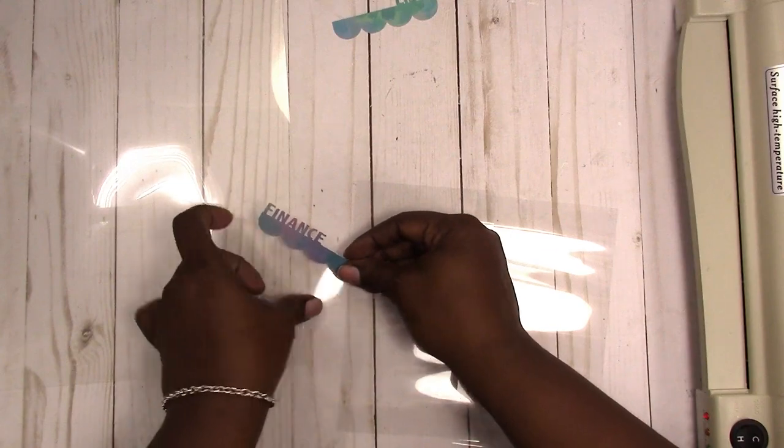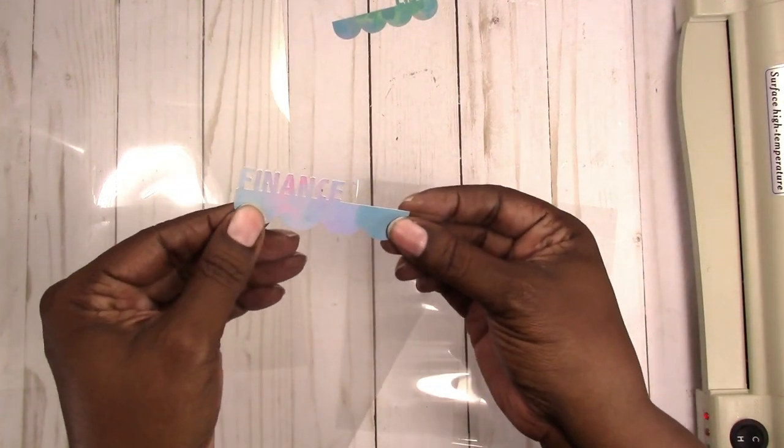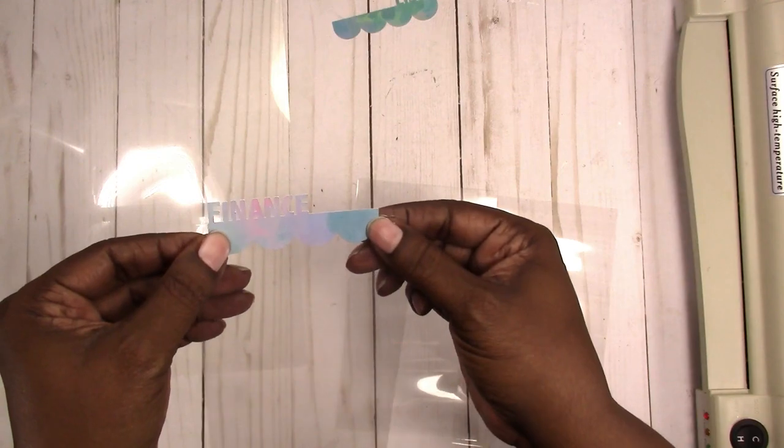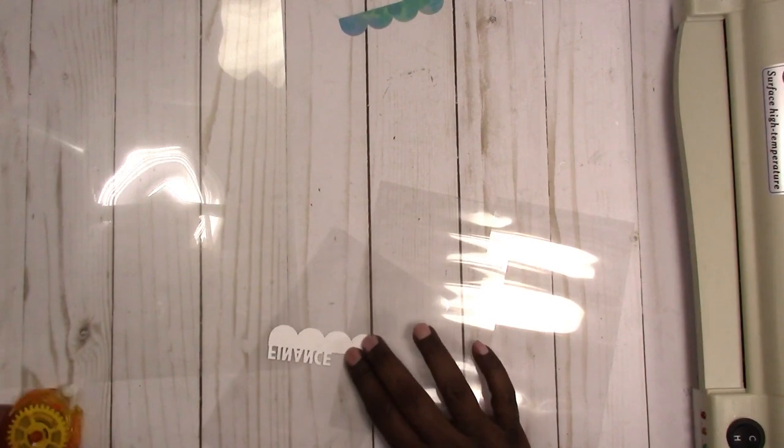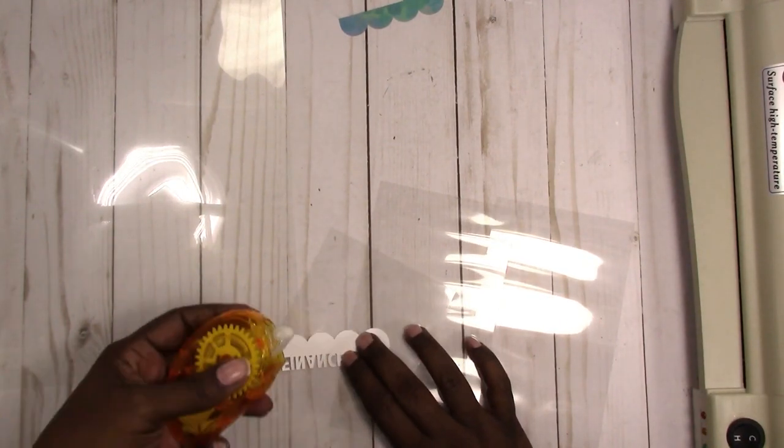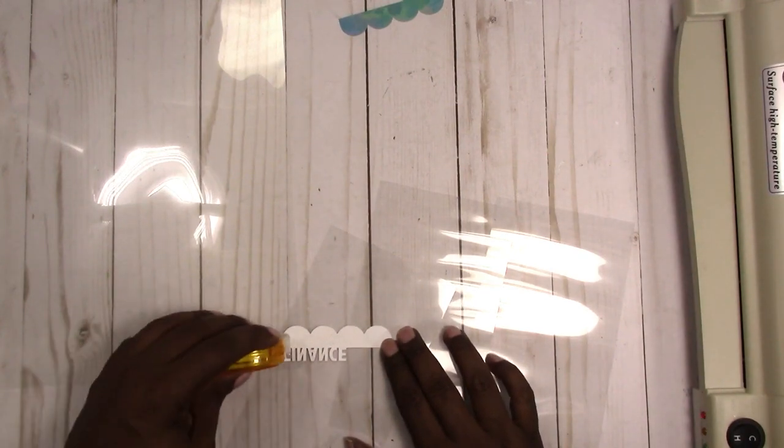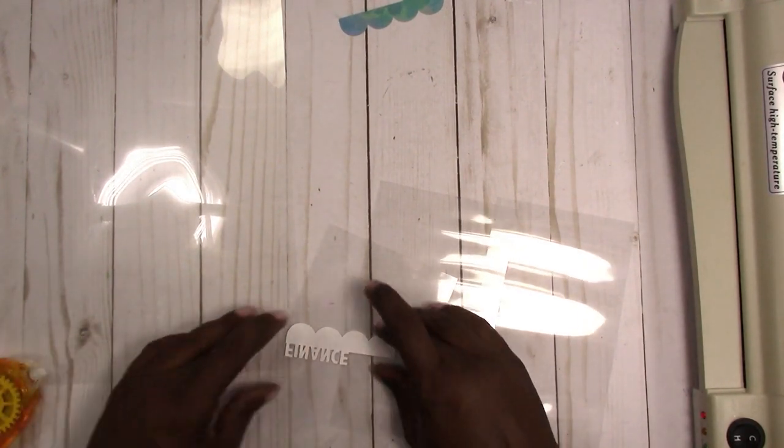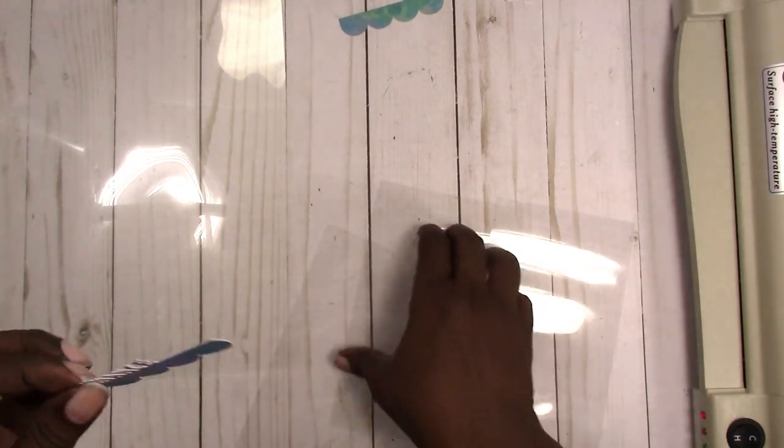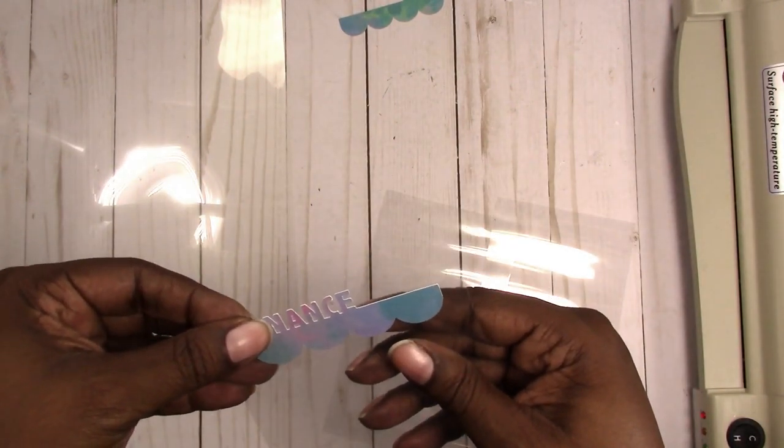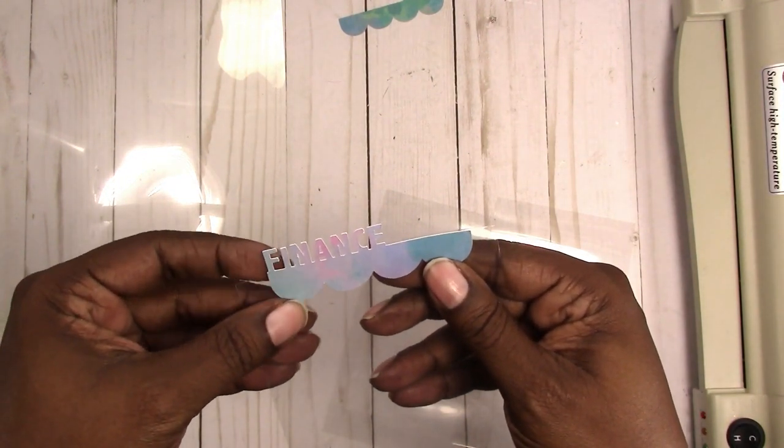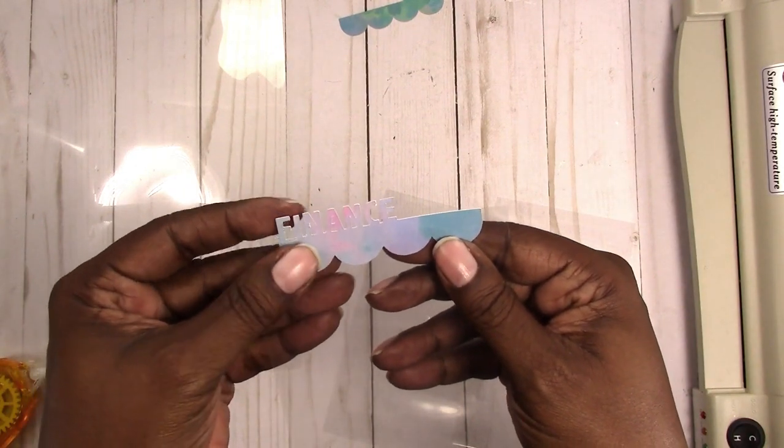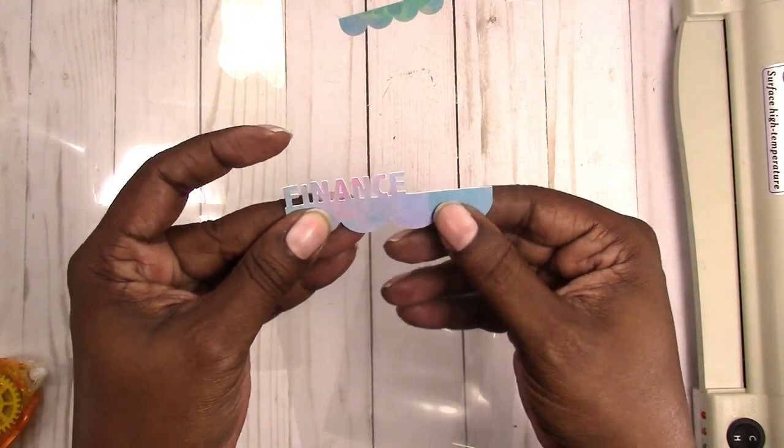I'm going to line these up. I think I'm going to put them in the center. Just to keep it from sliding around, I'm going to add a little adhesive on the back. A clear adhesive should work fine if you're worried about that showing. Let me line this up as best as I can.